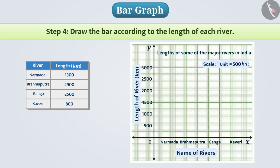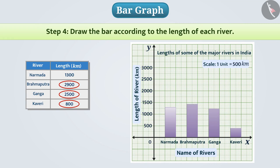Now, we will draw the bar according to the length of each river. For example, here we have drawn a bar denoting the length of Narmada river at 1300 km. Similarly, we will represent the lengths of all rivers as bars.